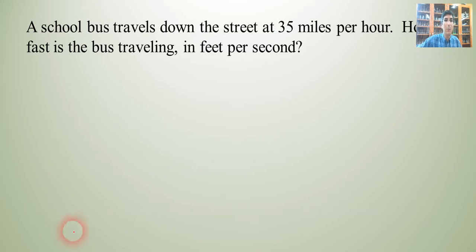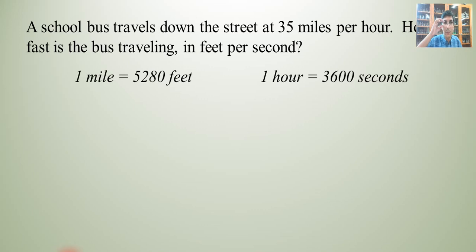Let's try another example. This time we have a school bus that's traveling down the street at 35 miles per hour. And that got cut off, but it says, how fast is the bus traveling in feet per second? And by the way, here's some other pieces of information that might be helpful. One mile equals 5,280 feet and one hour equals 3,600 seconds. So what you want to do first, as always, is write down what's given to you. So I'm going to take the 35 miles per hour and write it down just like this. And per means divide by. So 35 miles per hour means 35 miles divided by hour.